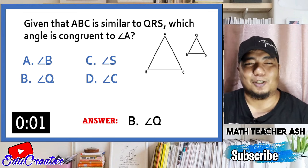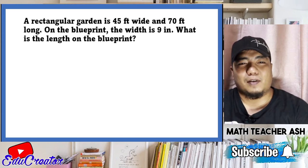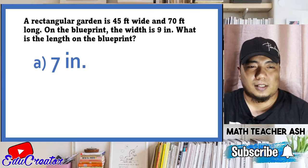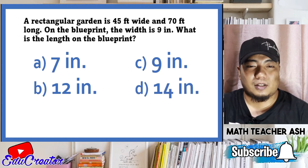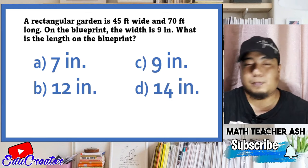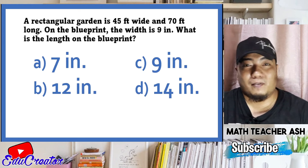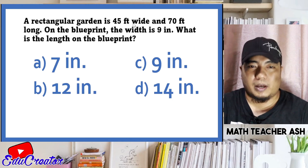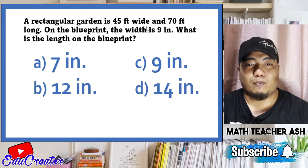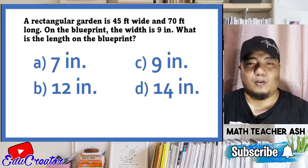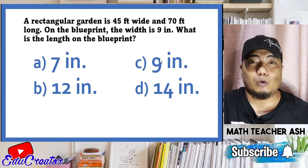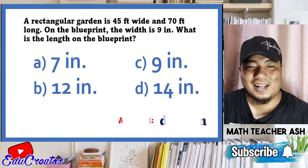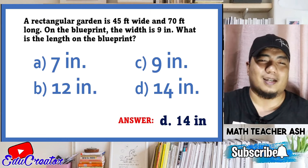A rectangular garden is 45 feet wide and 70 feet long. On the blueprint, the width is 9 inches. What is the length on the blueprint? Is it A 7 inches, B 12 inches, C 9 inches, or D 14 inches? The actual width is 45 and the blueprint width is 9 — it was divided by 5. Applying the same scale factor to the length: 70 divided by 5 equals 14 inches. The correct answer is letter D.